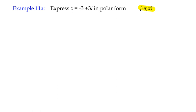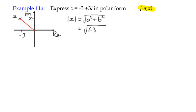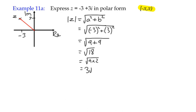Always, if you're given a complex number in Cartesian form, draw an Argand diagram first. With negative 3 and positive 3i, the complex number is in the second quadrant. The modulus is the square root of the two parts squared and added: negative 3 squared plus 3 squared, which is the square root of 18. Simplifying, that's 3 root 2.